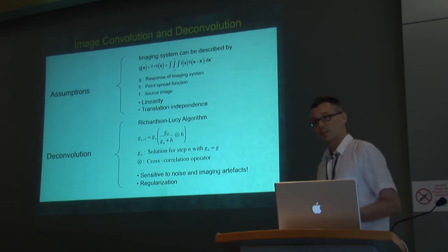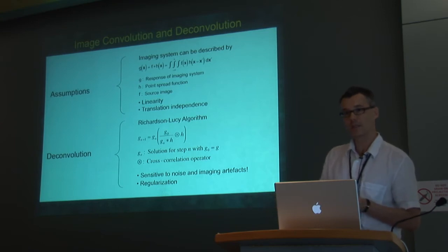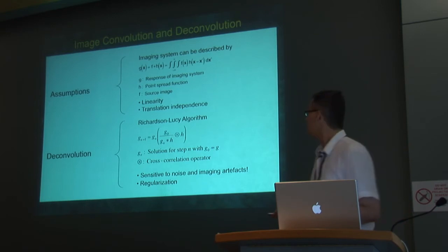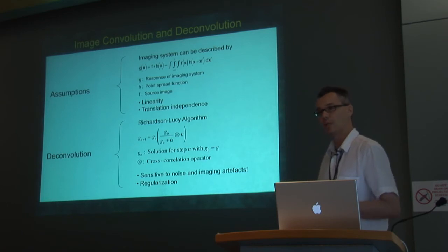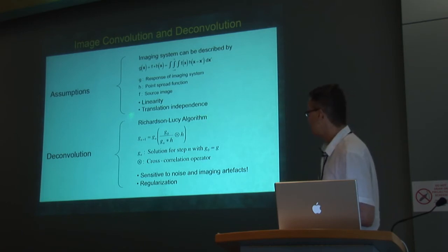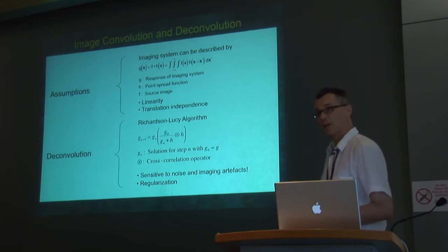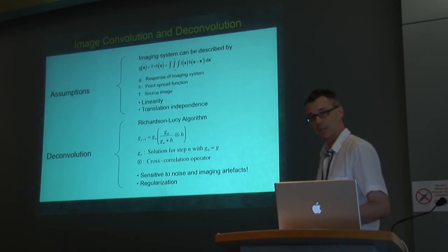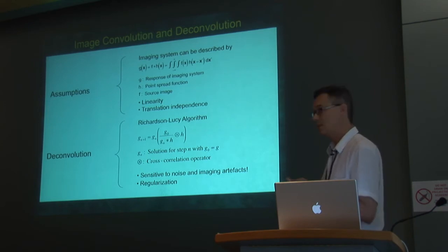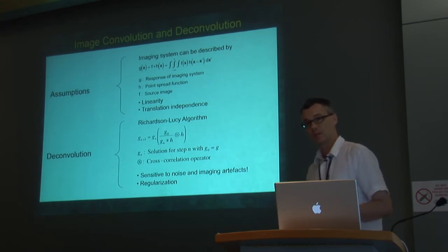This can be compensated for. It's first necessary to understand how these artifacts are generated — I mentioned convolution — and a simple model applies convolution over a 3D volume. Methods to reconstruct the image by deconvolution exist; these algorithms were originally developed for astronomy. One of the most prominent is the Richardson-Lucy algorithm, which needs detailed knowledge of the point spread function, something that needs to be measured beforehand.